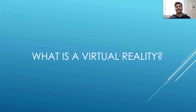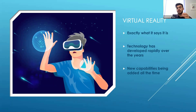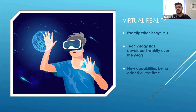The next question is: what is virtual reality? Virtual reality is exactly what it says it is — it is a reality that can be represented virtually, that we are able to enter and interact with using things like a headset or controllers to control aspects of the environment.